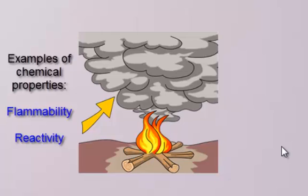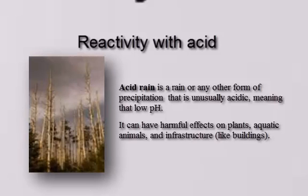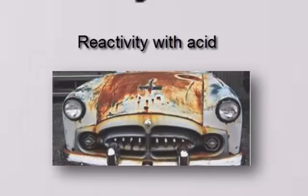Another example of a chemical property is reactivity. That's the ability of two or more substances to combine to form two or more new substances. An example would be reactivity with acid, like with acid rain that tends to degrade the soil or degrade even like cars and stuff.